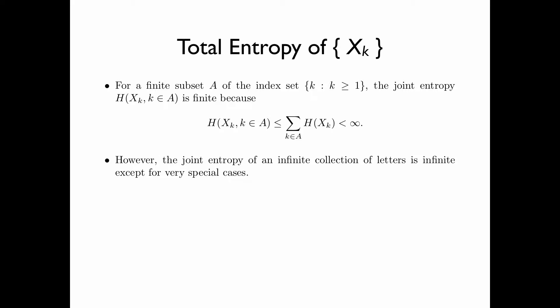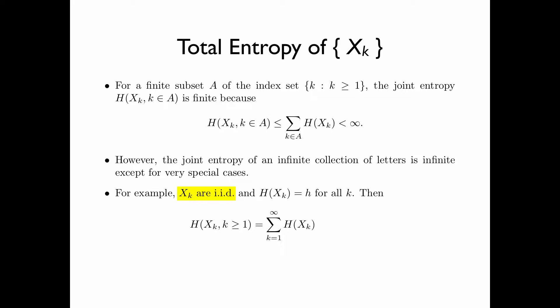However, the joint entropy of an infinite collection of letters is infinite, except for very special cases. In the simplest example, x sub k are iid, and so the entropy of x sub k is equal to a constant h for all k. In this case, the joint entropy of x sub k, k greater than or equal to 1, equals the summation of h for k from 1 up to infinity, which is equal to infinity.